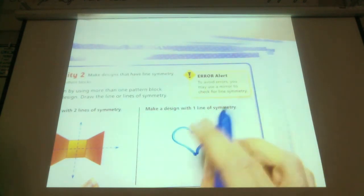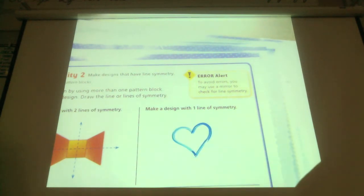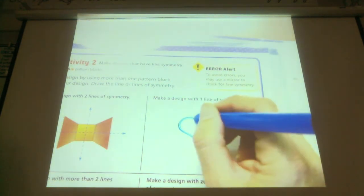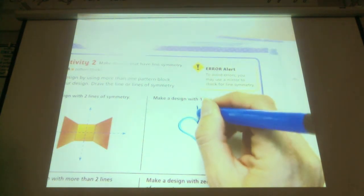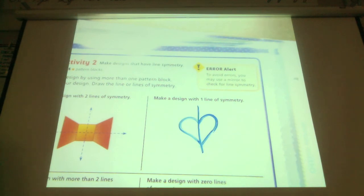Pretend it's a perfect heart. It is a perfect heart — it's a beautiful thing. My line of symmetry goes in which direction? Vertical. Assuming it's a perfectly drawn heart, are there any other lines of symmetry? No, there's no other lines.